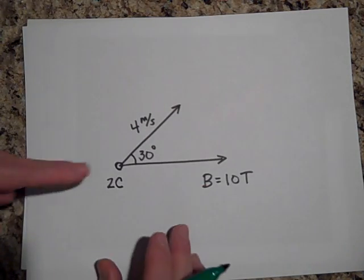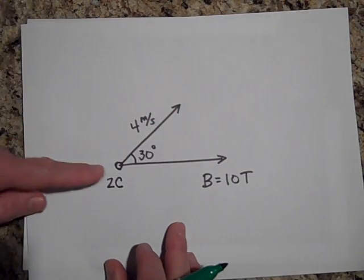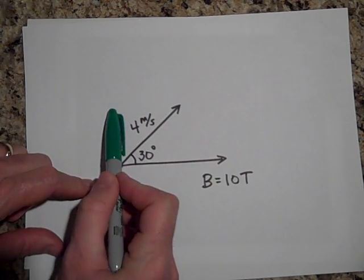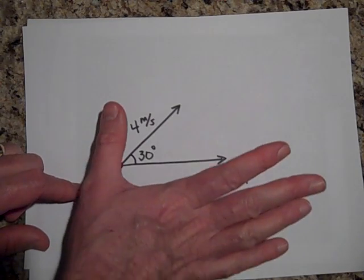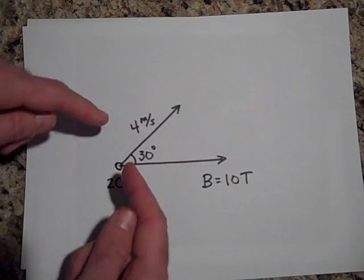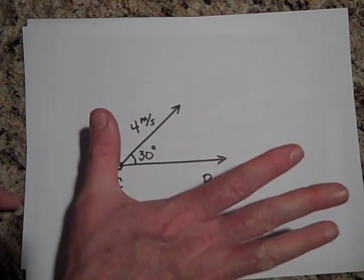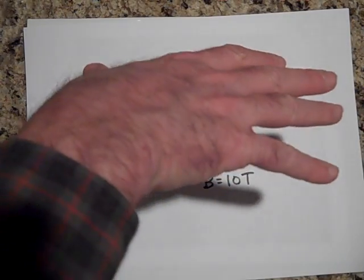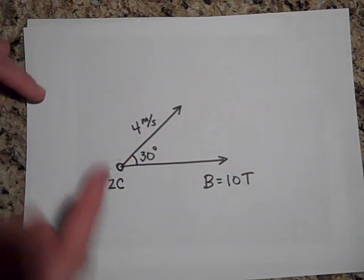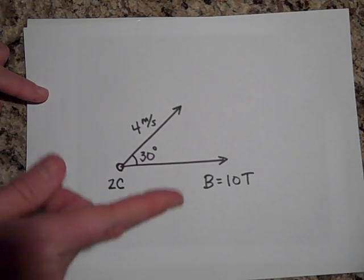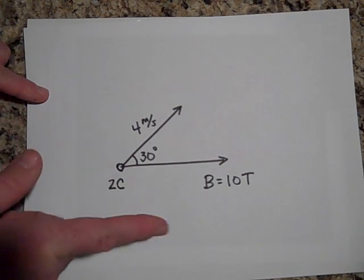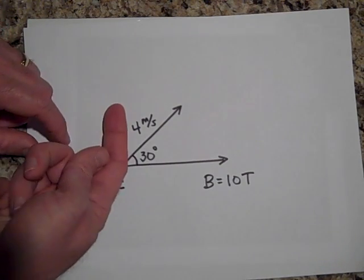Some part of this charge is going to keep going that way. If this charge were only heading up, the first thing that would happen is it would get pushed down, then sideways, then come around — it would just go around in a circle. That's only if the velocity vector is straight up.